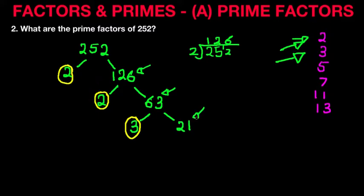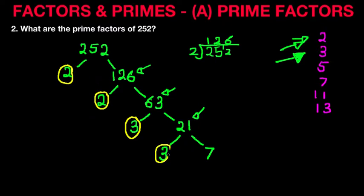Now, the number 21 — can we divide that any further? Is it a prime number? Well, it's not a prime number. We can't divide it by 2 because it's an odd number, so dividing it by 3 we get 7. 3 times 7 is 21. So we've got our next prime factor — it's a 3. But look at the number left over: that's a 7, and 7 is a prime number.